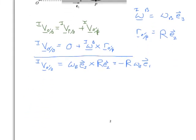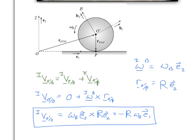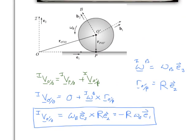And that's it! We've found the inertial velocity of O', the center of the wheel: it equals negative R omega b in the e1 direction. This makes sense because our angular speed is counterclockwise, so we'd anticipate O' moving to the left, and left is the negative e1 direction.